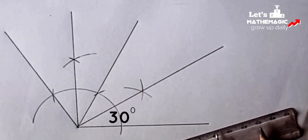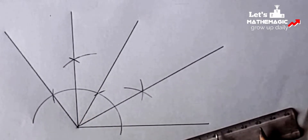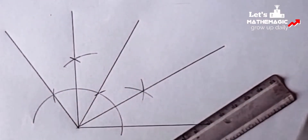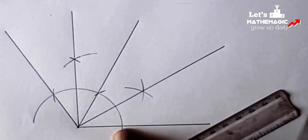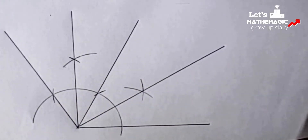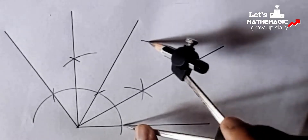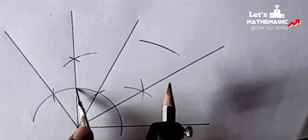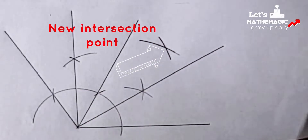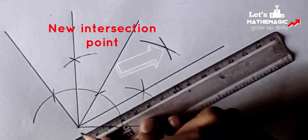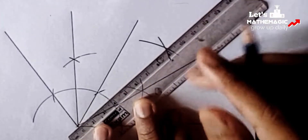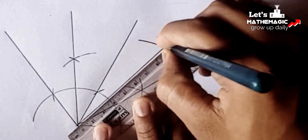We have joined it and we have got the 30 degree angle. Now in the same way, if we bisect 90 degrees we will get 45 degrees. We increase the compass measurement a bit. We put the compass pin on the 90 degree arm and make an arc, then put the pin on the 90 degree mark where the line and arc meet and make a new arc, getting a new intersection point. Joining that intersection point with the left end of the line segment, we get the 45 degree angle.